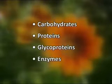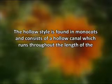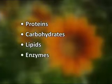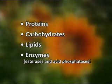The hollow style is predominantly found in monocots and consists of a hollow canal which runs throughout the length of the style from stigma to its base. A layer of glandular cells surrounds the stylar canal, which secretes mucilaginous substances into the canal, serving as nutrition for the growing pollen tube. These secretions contain proteins, carbohydrates, lipids, and some enzymes such as esterases and acid phosphatases.